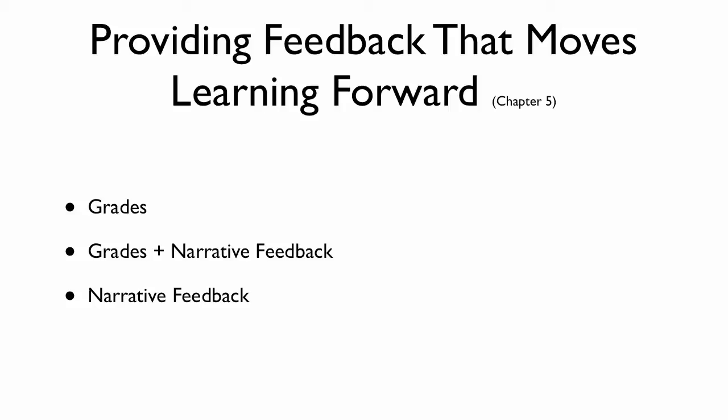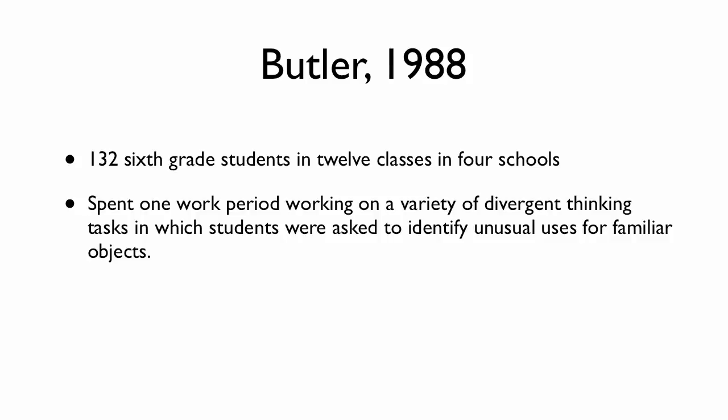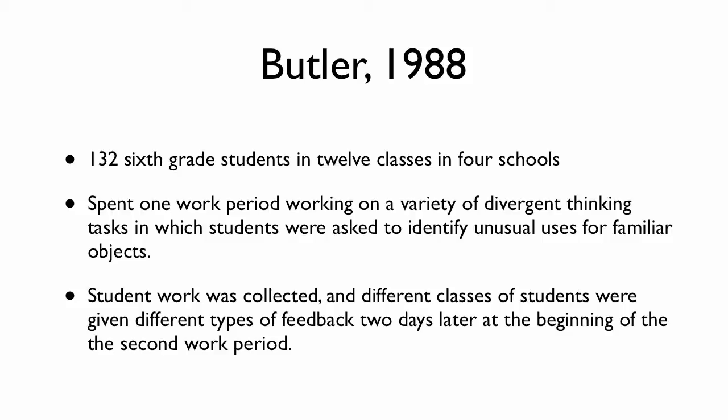Butler in 1988 conducted a study that consisted of 132 sixth grade students in 12 classes in four different schools. The students spent one work period working on a variety of divergent thinking tasks in which they were asked to identify unusual uses for familiar objects. After that, their work was collected and examined by the instructors and researchers, and different students were given different types of feedback based on which group they were in.